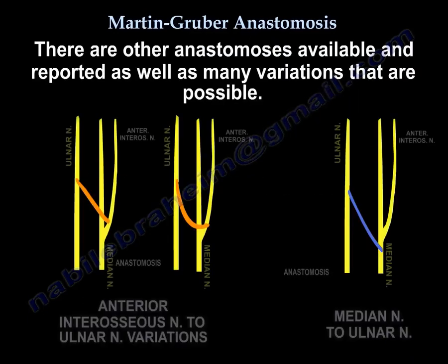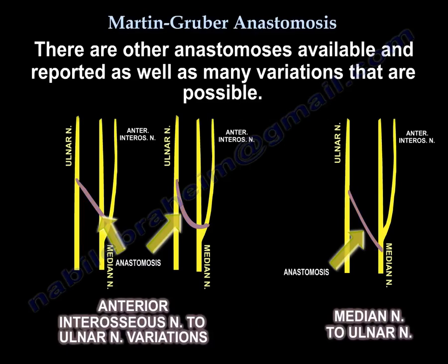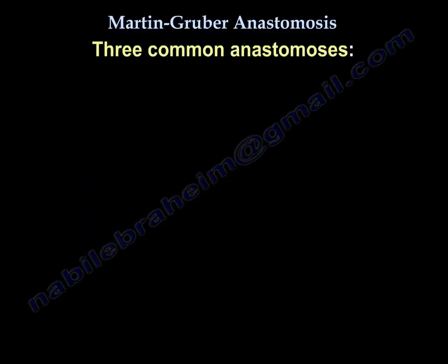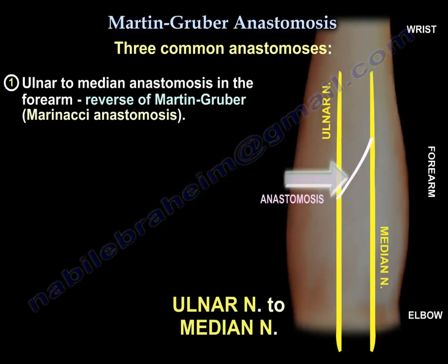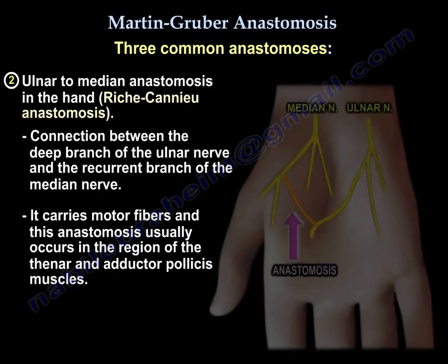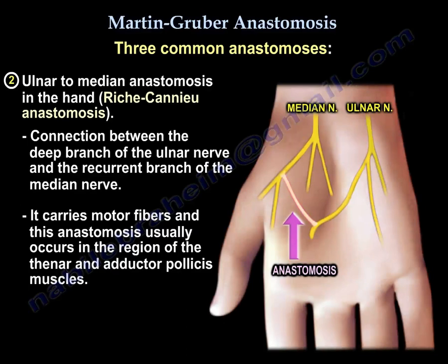There are other anastomoses reported, with many variations possible. The common ones include: ulnar to median anastomosis in the forearm, the reverse of Martin Gruber, called Marinassi anastomosis; and ulnar to median anastomosis in the hand, called Riche-Cannieu anastomosis. It is a connection between the deep branch of the ulnar nerve and the recurrent branch of the median nerve, carrying motor fibers, usually occurring in the region of the thenar and adductor pollicis.